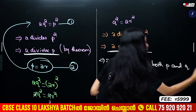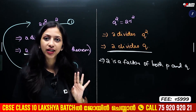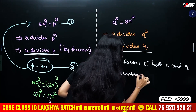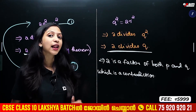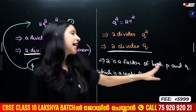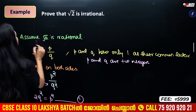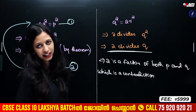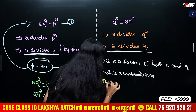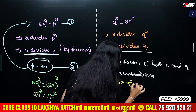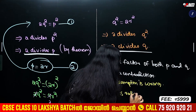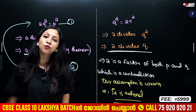This is a contradiction to our assumption that P and Q have only 1 as their common factor. Therefore, our assumption is wrong. Root 2 is not rational — root 2 is irrational.